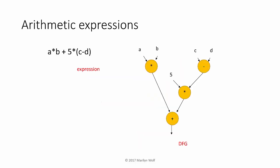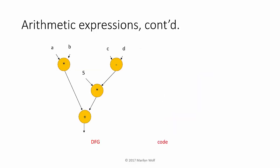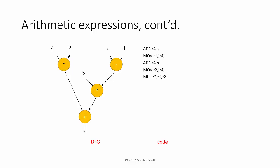Here's an arithmetic expression and here's our data flow graph for that expression. We can see that the data flow graph is three levels deep. The simplest way to generate code for this data flow graph is to walk through the graph and generate code at the various steps. We start with the node A times B and generate code that reads in A and B and performs the operation.